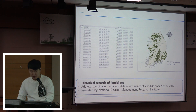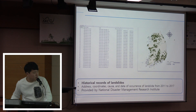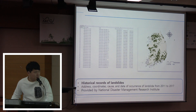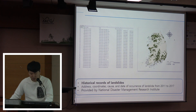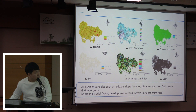This is the research material and historical records of landslides. It includes address, coordinates, and cause and date data across landslides from 2011 to 2017. It is provided by the National Disaster Management Research Institute. This is the landslide factor which I will examine, including distance from roads through image conditions.